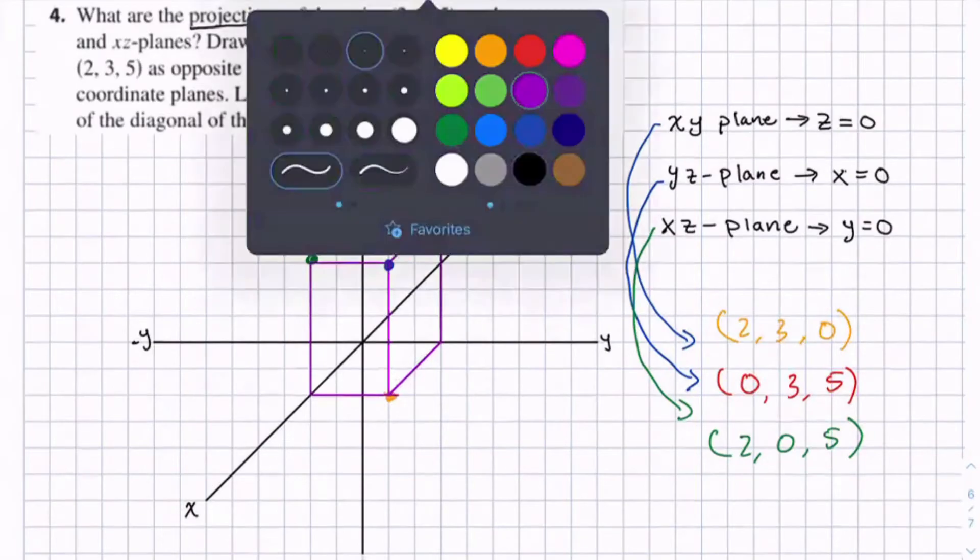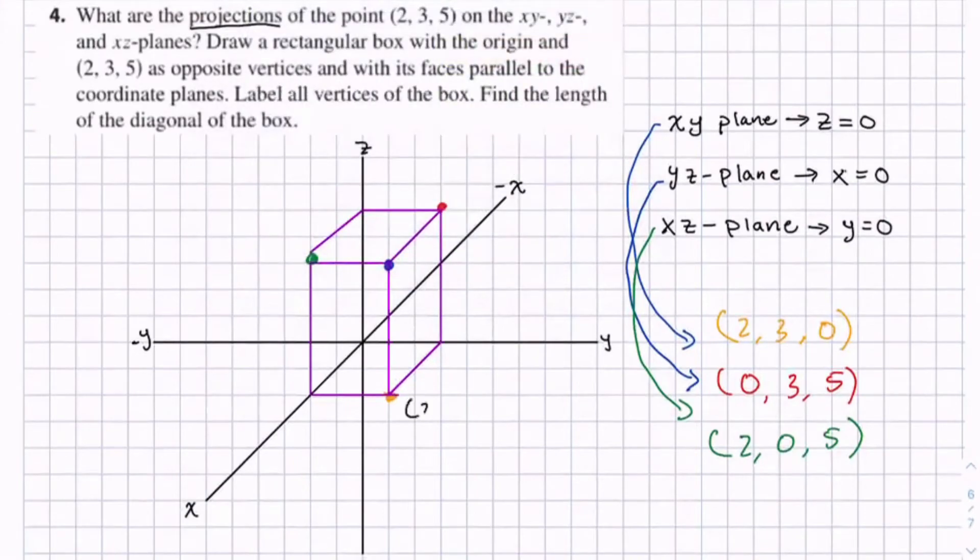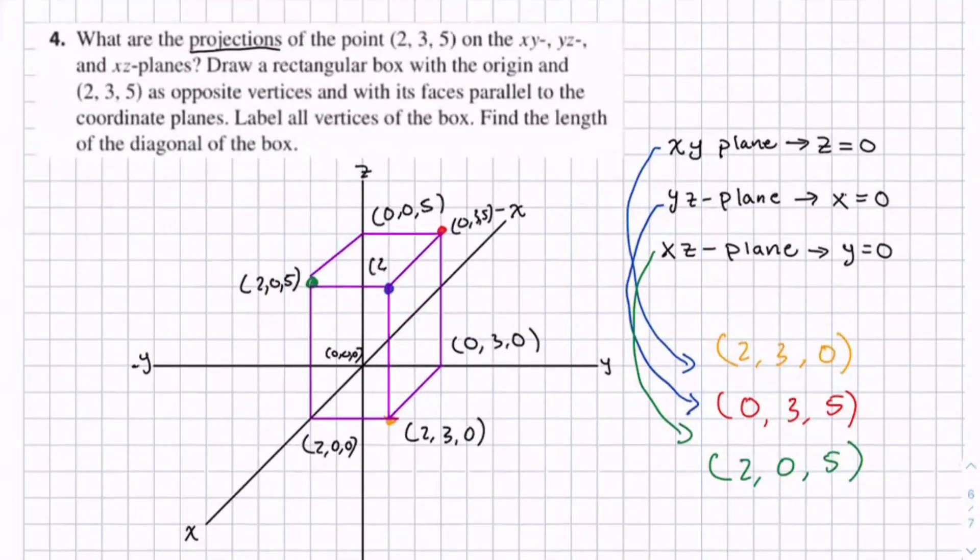And if we're going to label all the vertices, this is kind of time consuming. So we have 2, 3, 0. Then 2, 0, 0. 0, 3, 0. This point back here is going to be 0, 0, 0. 2, 0, 5. 0, 0, 5. 0, 3, 5. And 2, 3, 5.